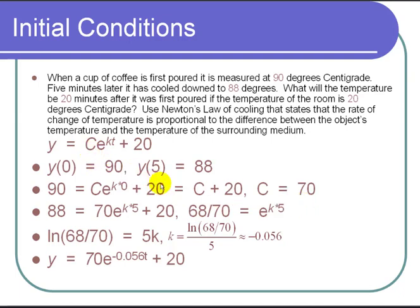So that tells us that this c right here is 70. And I can use the second condition, y of five is 88, and plug in. We get 88 equals 70. That was our c. Times e to the k times our time is 5. Plus 20.